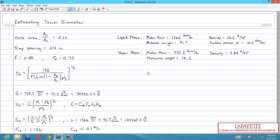The next parameter is the surface tension factor, f sub st, which is equal to the surface tension in dynes per centimeter over 20 raised to 0.2 power. The problem gives the surface tension as 10.6 dynes per centimeter, so we can plug that in to get our f sub st value of 0.88.